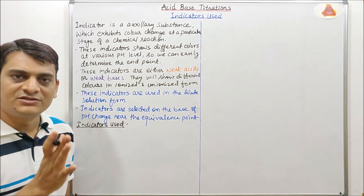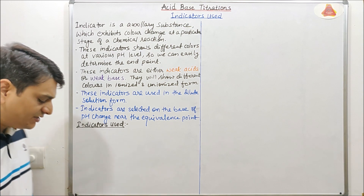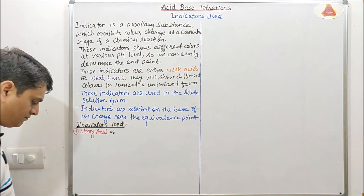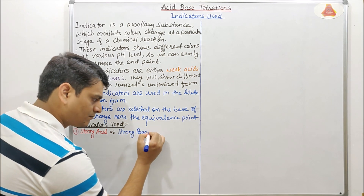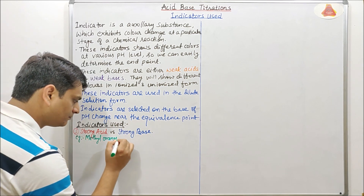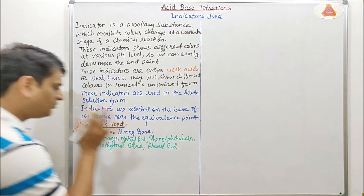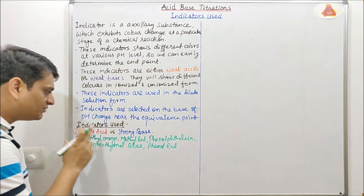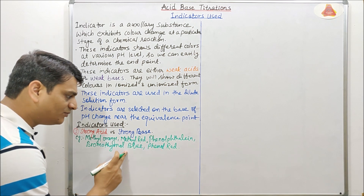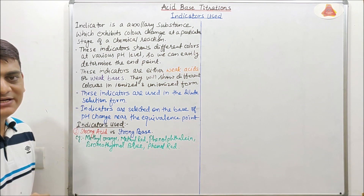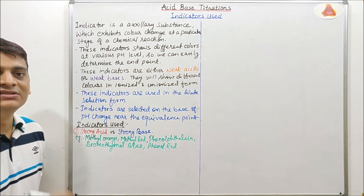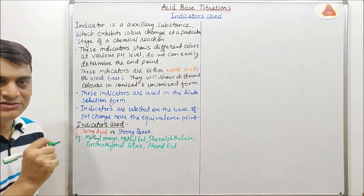First, I am talking about strong acid versus strong base titration. In this type of titration, we can use methyl orange, methyl red, phenolphthalein, bromothymol blue, and phenol red as indicators.